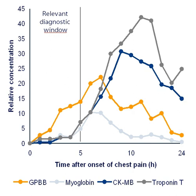Biomarkers are used in many scientific fields. In medicine, a biomarker can be a traceable substance that is introduced into an organism as a means to examine organ function or other aspects of health. For example, rubidium chloride is used as a radioactive isotope to evaluate perfusion of heart muscle.